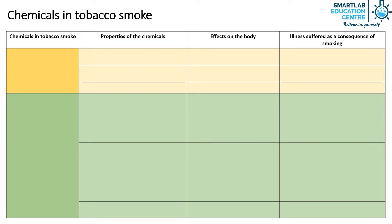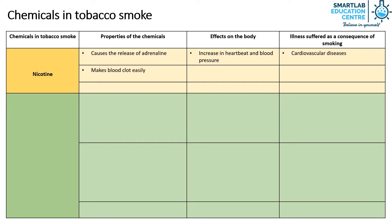The first chemical found in tobacco smoke is nicotine. Nicotine causes the release of adrenaline, which causes an increase in heartbeat and blood pressure. As a result, this can lead to cardiovascular diseases. Nicotine also makes blood clot easily, causing an increased risk of the formation of blood clots in blood vessels, which can also lead to cardiovascular diseases.